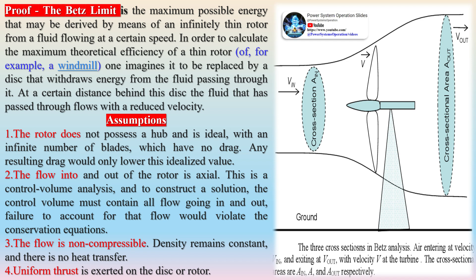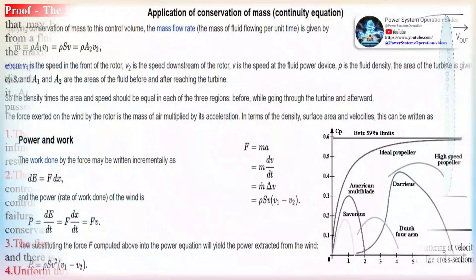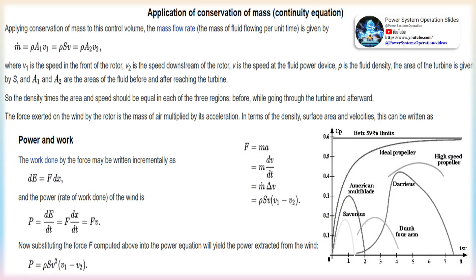Betz received the Ludwig Prandtl Ring from the Deutsche Gesellschaft für Luft- und Raumfahrt (German Society for Aeronautics and Astronautics) for outstanding contribution in the field of aerospace engineering in 1958. He was also awarded the Carl Friedrich Gauss Medal of the West German Academy of Science in 1965. A street is named after him in Munich and in Hamburg, and his original house in Gerdingen is noted as a town monument.